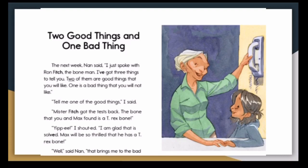Two good things and one bad thing. The next week, Nan said, I just spoke with Ron Fitch, the bone man. I've got three things to tell you. Two of them are good things that you will like. One is a bad thing you will not like. Tell me one of the good things, I said. Mr. Fitch got the test back. The bone that you and Max found is a T-Rex bone. Yippee! I shouted. I am glad that it is solved. Max will be so thrilled that he has a T-Rex bone. Well, said Nan. That brings me to the bad thing.